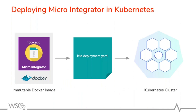With immutable Docker images, it's very easy to deploy Micro Integrator integration solutions to a Kubernetes cluster. You write a Kubernetes deployment YAML specifying how many nodes you want, how to scale, how to update, and all deployment details. Using the kubectl tool, you can easily deploy it to the Kubernetes cluster.